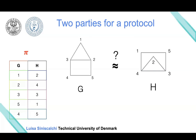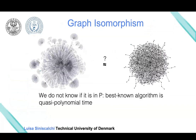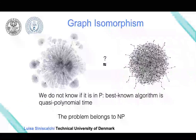This means there exists a certificate—or in other words, a witness—such that given the instance of the problem, in this case graphs G and H, we can check that these two graphs are isomorphic. So the problem is actually in NP.